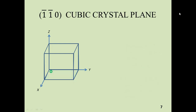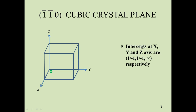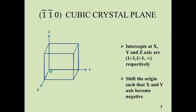Next we have to draw the (1̄1̄0) cubic crystal plane. The intercepts at the x, y, and z-axis are: minus 1 over 1 at the x-axis, minus 1 over 1 at the y-axis, and infinity at the z-axis. Both intercepts at the x-axis and y-axis are negative, so we have to shift the origin such that both the x and y axes become negative. Drop the origin from this position; our new origin is this one.